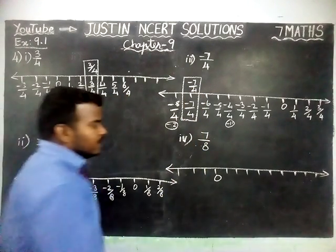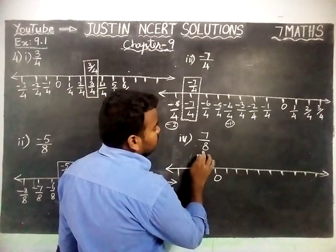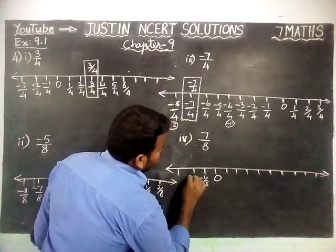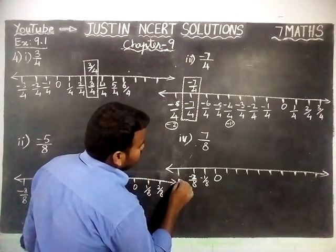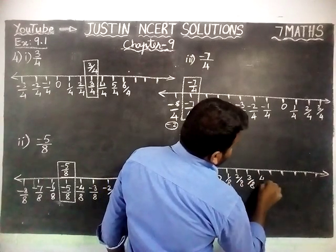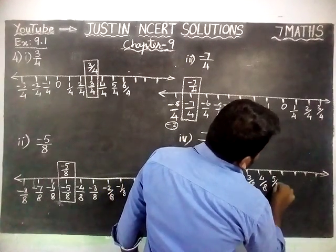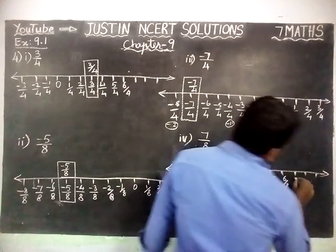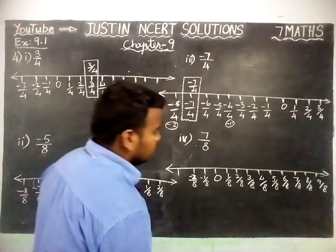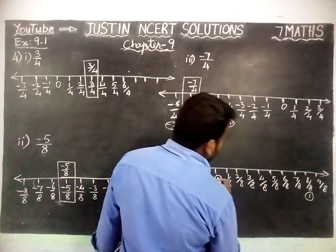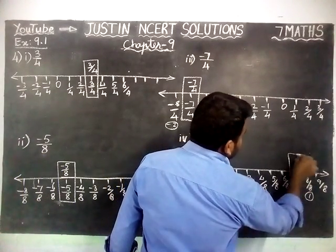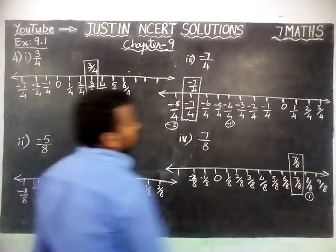Fourth one: 7 by 8. The denominator is 8, so we divide into 8 parts. Left hand side: minus 1 by 8, minus 2 by 8. Right hand side: 1 by 8, 2 by 8, 3 by 8, 4 by 8, 5 by 8, 6 by 8, 7 by 8, 8 by 8. Here, 8 by 8 equals 1. So in between 0 and 1, 7 by 8 is located here.